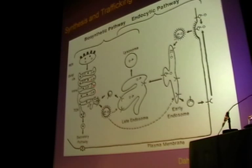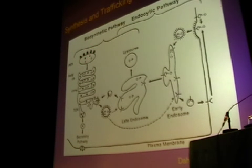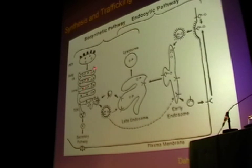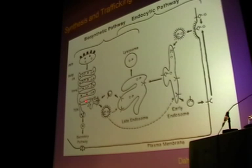Lysosomes are normally synthesized in the endoplasmic reticulum where they receive their core glycosylation, and as they travel through the Golgi apparatus, they pick up the mannose-6-phosphate recognition signal, as they get to the trans-Golgi network.